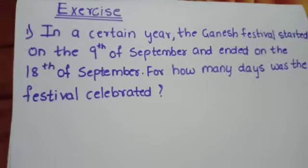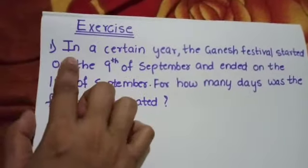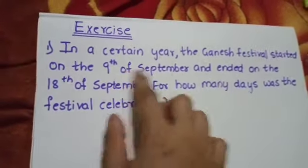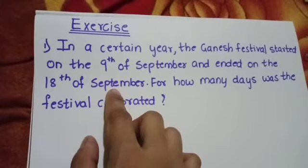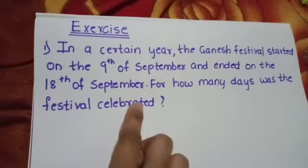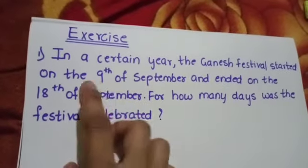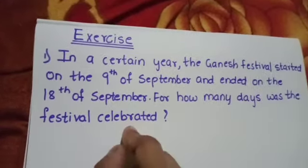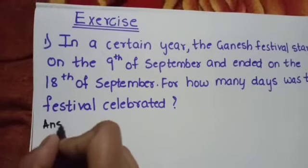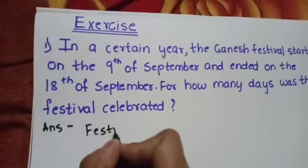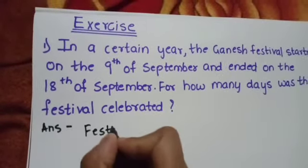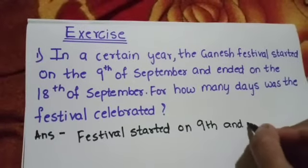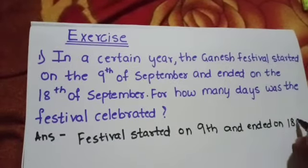Have you all understood? Now let us start with the exercise on your textbook page number 45. First one: in a certain year, the Ganesh festival started on the 9th of September and ended on the 18th of September. For how many days was the festival celebrated? The festival started on 9th and ended on 18th of September.